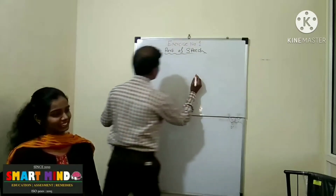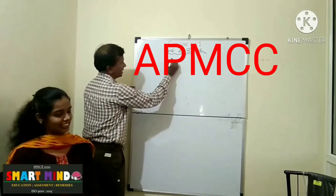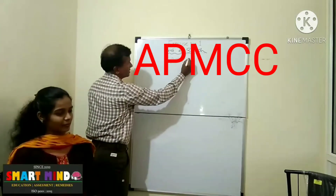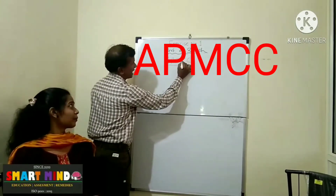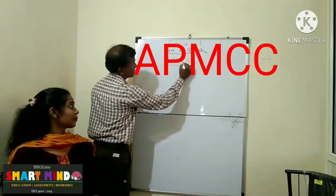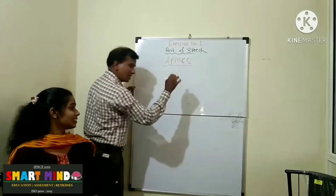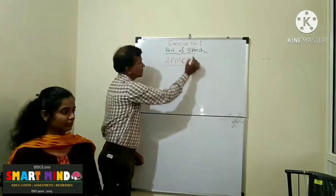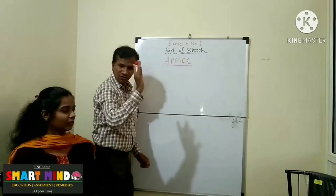Just see: A, P, M, C. Purposely, I have written that C double here. Again C, again C. Why? Because it includes the types of nouns.